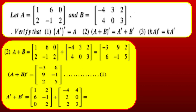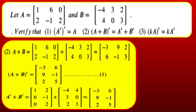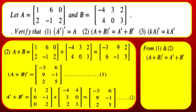Now find A^T + B^T. A^T = [[1,2],[6,−1],[0,2]] and B^T = [[−4,4],[3,0],[2,3]]. Adding: [[1+(−4), 2+4],[6+3, −1+0],[0+2, 2+3]] = [[−3,6],[9,−1],[2,5]]. Comparing with (A+B)^T, both are the same, so (A+B)^T = A^T + B^T is verified.